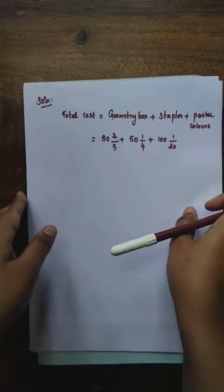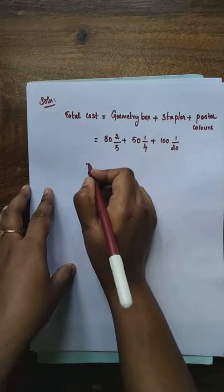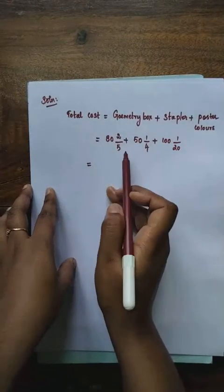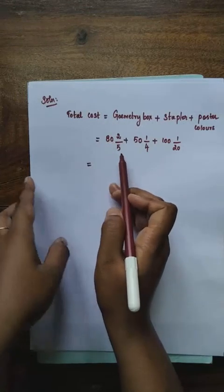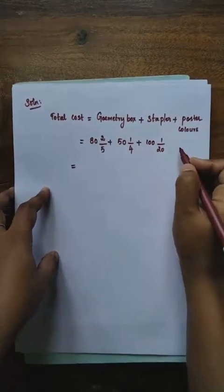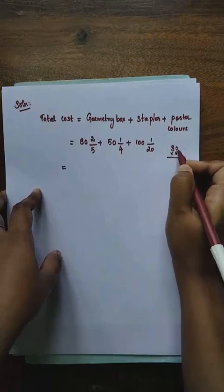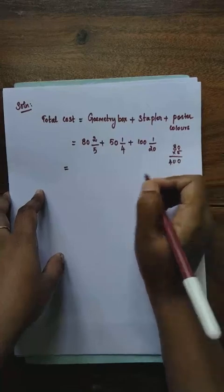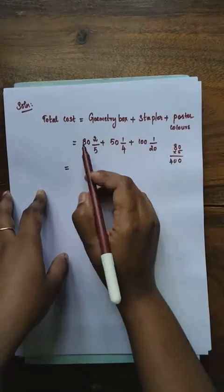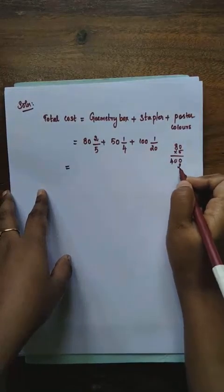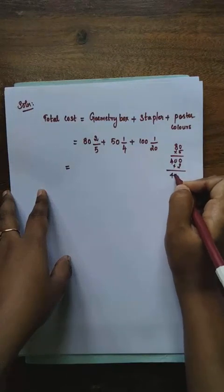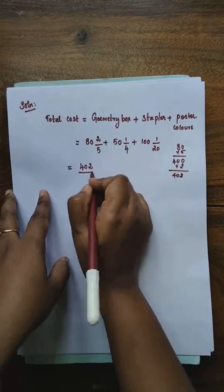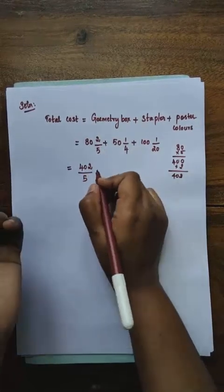For 82 and 2/5: multiply 80 by 5, which is 400, then add 2, giving 402. So we get 402/5. For the second term, 51 and 1/4: multiply 50 by 4, which is 200, then add 1, giving 201. So we get 201/4.